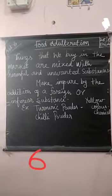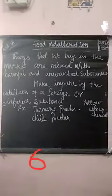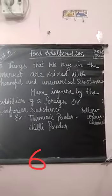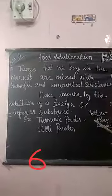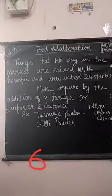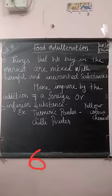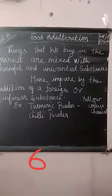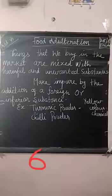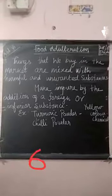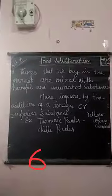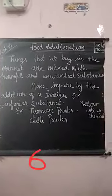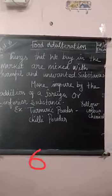One more example is peas — green color peas. They add green color dye so that the peas look very green. When you wash those peas in warm water, you can see that green color coming out — that is because they added green color dye. These are examples of food adulteration. Used tea leaves are also sometimes used as an adulterant in tea.